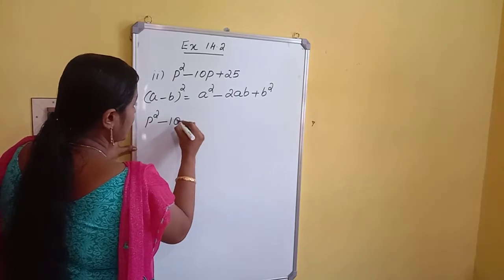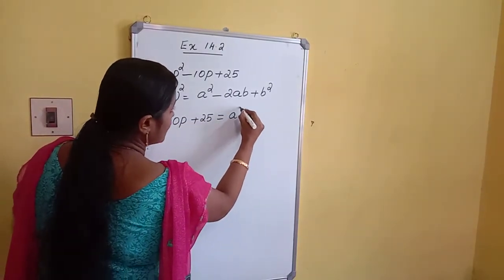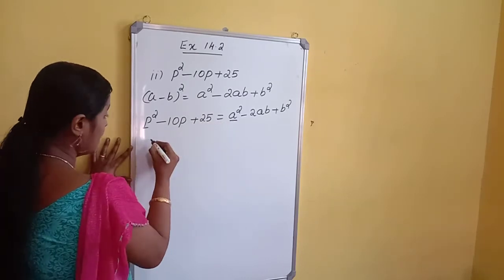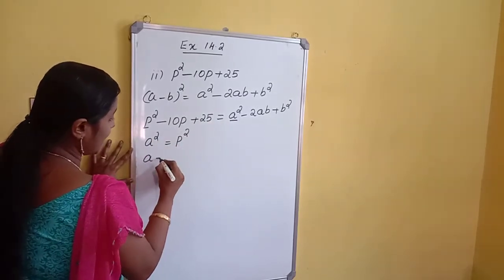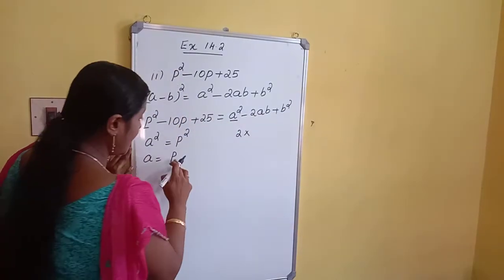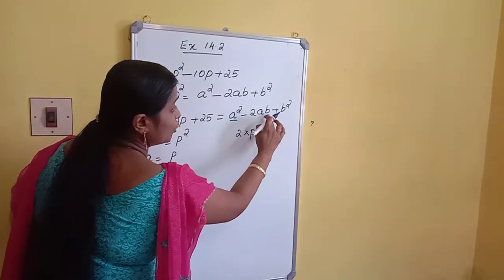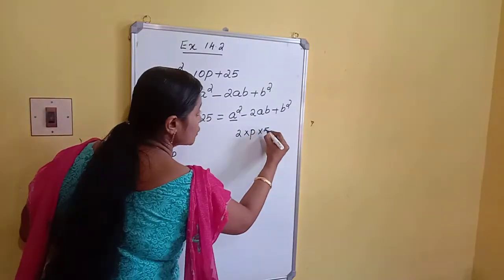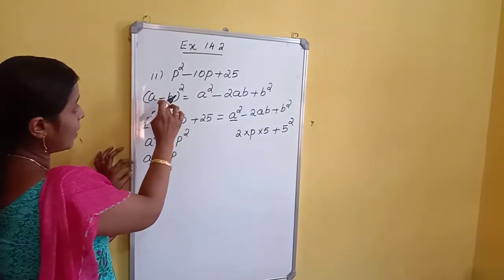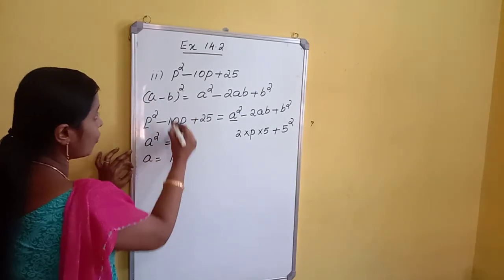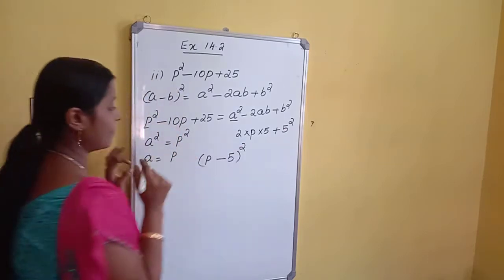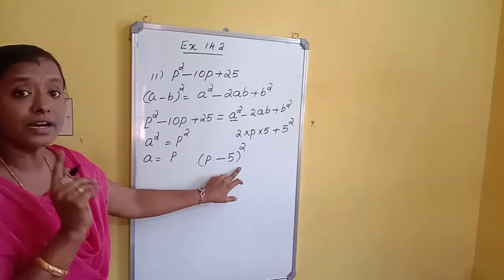Comparing P squared minus 10P plus 25 to A squared minus 2AB plus B squared: A squared is P squared, so A equals P. Then 2 into A means 2P, and we need the number multiplied to get 10, which is 5. So B equals 5, and B squared is 5 squared equals 25. Applying the identity: A minus B whole square gives us P minus 5 whole square, which is the required factorization.